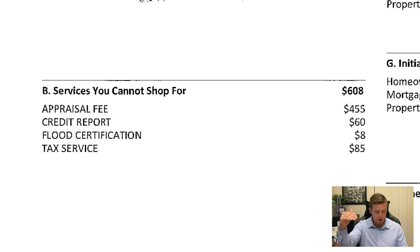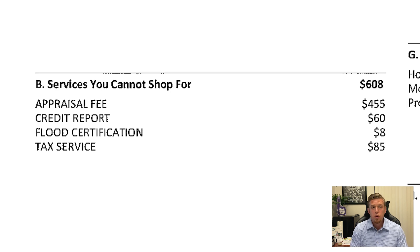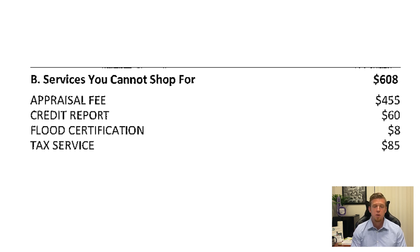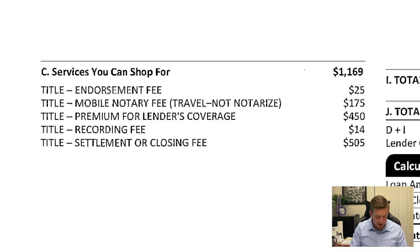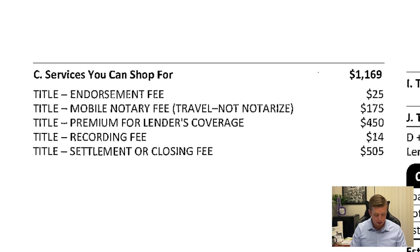Box B is services you cannot shop for. This is where the appraisal fee, the credit report fee, flood certification, and tax certification go. Keep in mind that even if an appraisal isn't needed — since we're talking refinances in this video — it's going to show up there and will continue to show up on your loan estimate until final docs are out. You just have to take your loan originator's word for it. It is by law that we have to keep it on there in case, even if we got an appraisal waiver, it's needed at a later time. Box C is a bunch of title fees: endorsement, mobile notary, lender's coverage, recording fee, settlement fee.